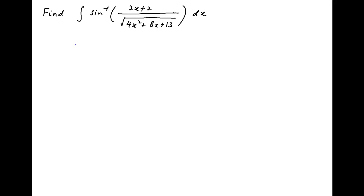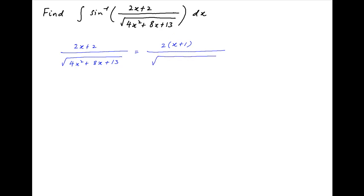We start with the expression 2x plus 2 divided by square root of 4x squared plus 8x plus 13, which appears in the integrand of the given integral. The numerator can be written as 2 times (x plus 1), and the denominator as square root of 4 times (x squared plus 2x plus 1) plus 9, or 3 squared. This equals 2(x+1) divided by square root of 4(x+1)² plus 3².